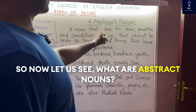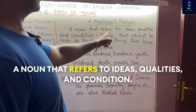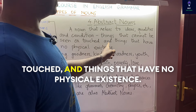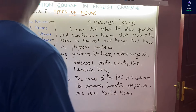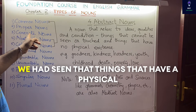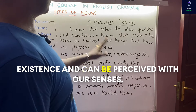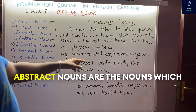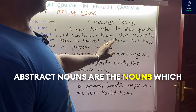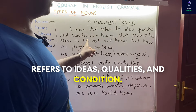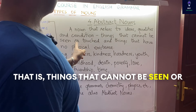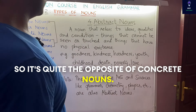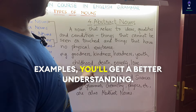Now let us see what abstract nouns are. A noun that refers to ideas, qualities, and conditions — that is, things that cannot be seen or touched and have no physical existence — is an abstract noun. In contrast to concrete nouns, abstract nouns refer to things with no physical existence. When you look at the examples you will get a better understanding.